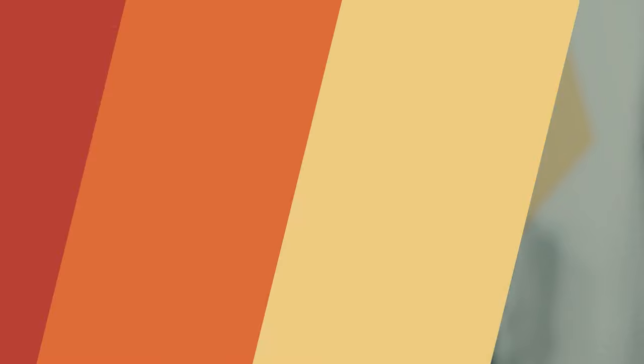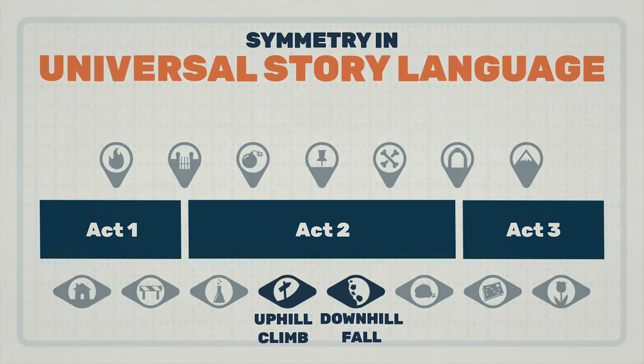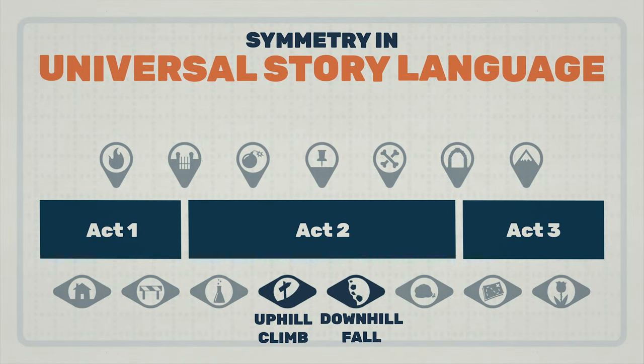The uphill climb and downhill fall are mirrored because the uphill climb shows a series of successes, while the downhill fall shows a series of failures. They both point in a clear direction, whether up or down, and are often some of the longest phases in your story.